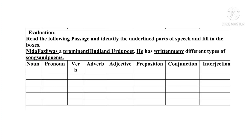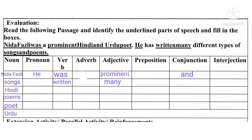The next activity is evaluation. Here also you are given some sentences and asked to sort out the underlined words in the proper column. We can classify them as follows. Nouns: Nida Fasli, songs, Hindi, poems, poet, and Urdu. Pronoun: he. Verb: was written. Adverb: none. Adjectives: prominent and many. Preposition and interjection: none. Conjunction: and. In this way, we can classify the underlined words.